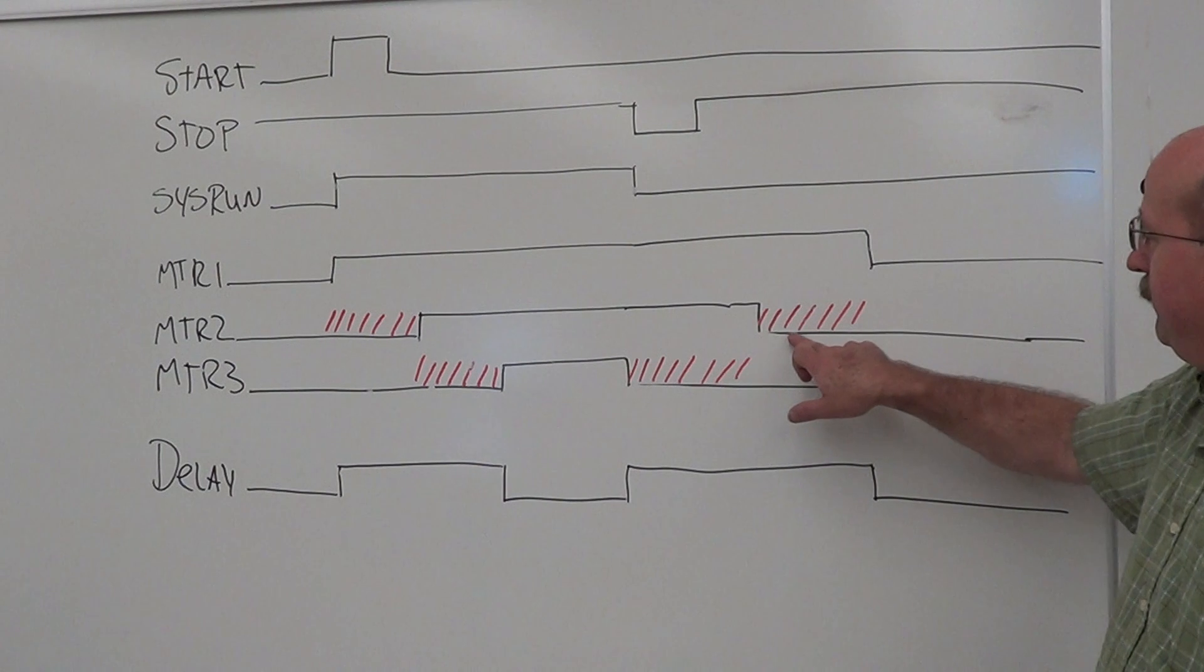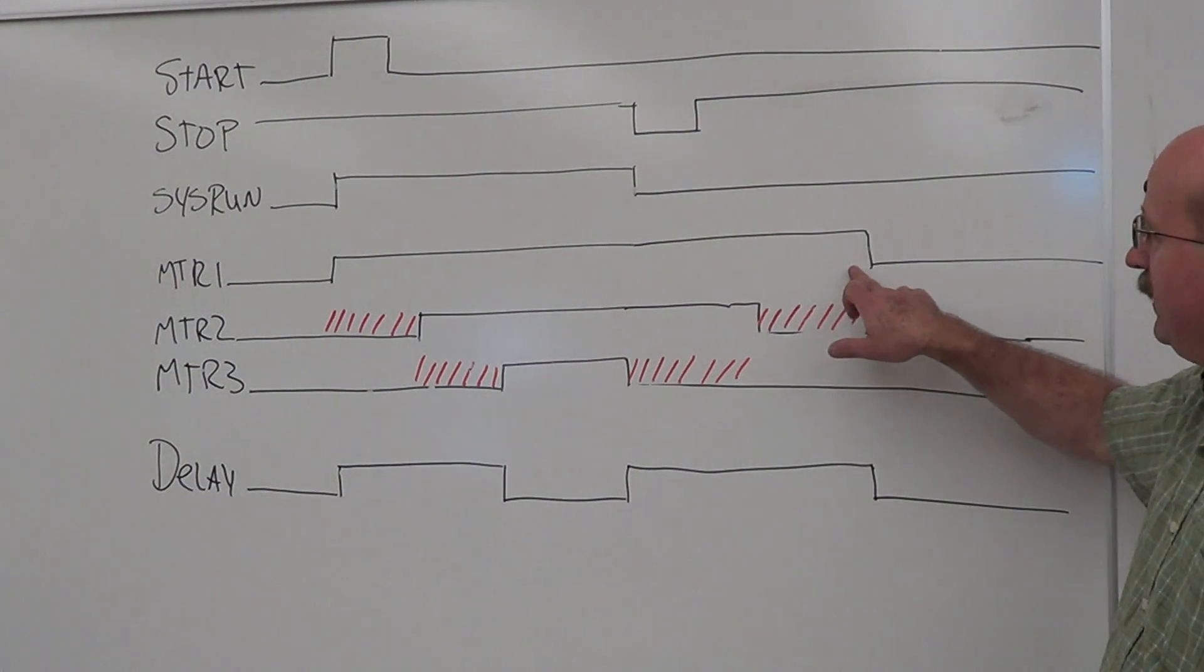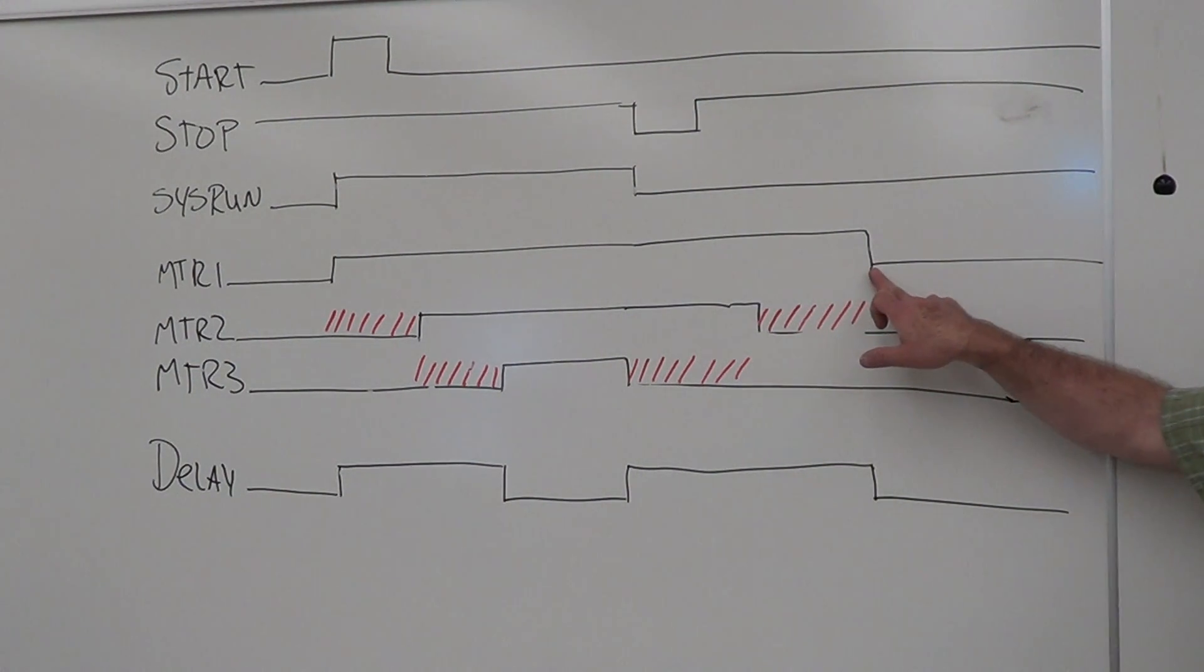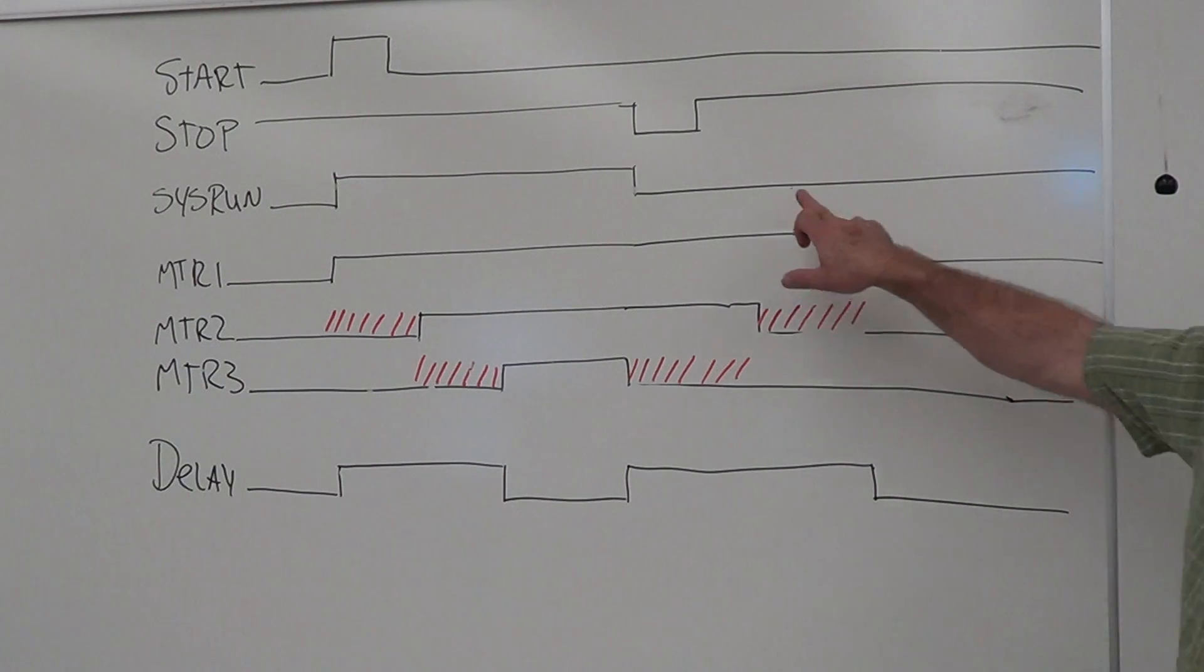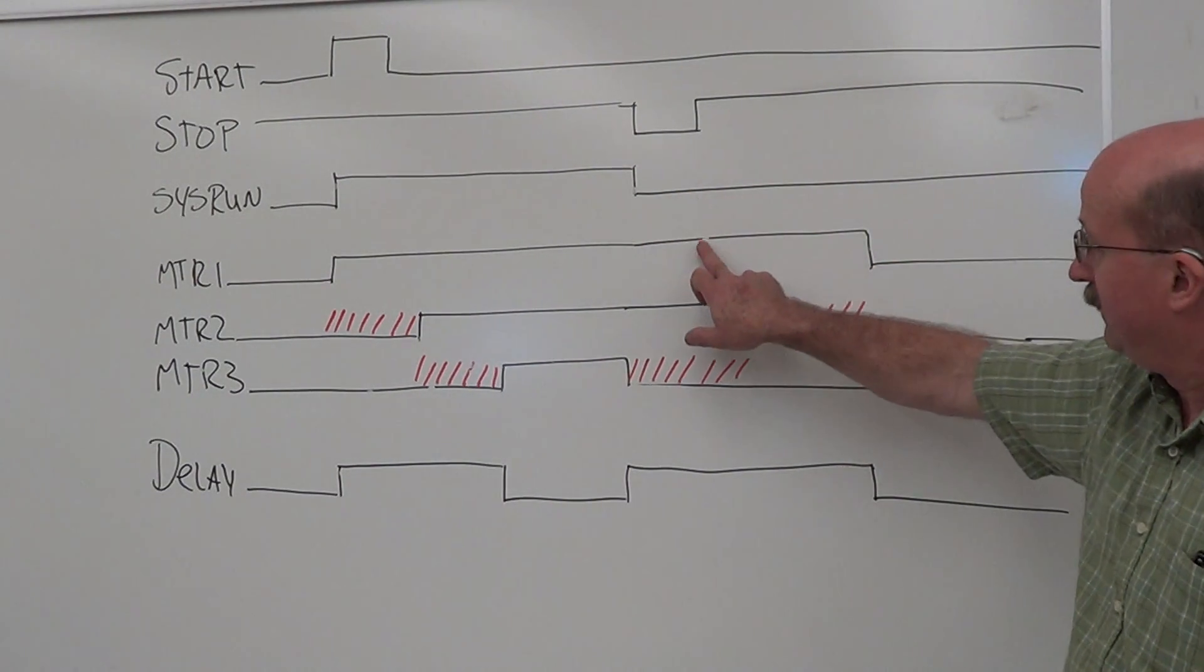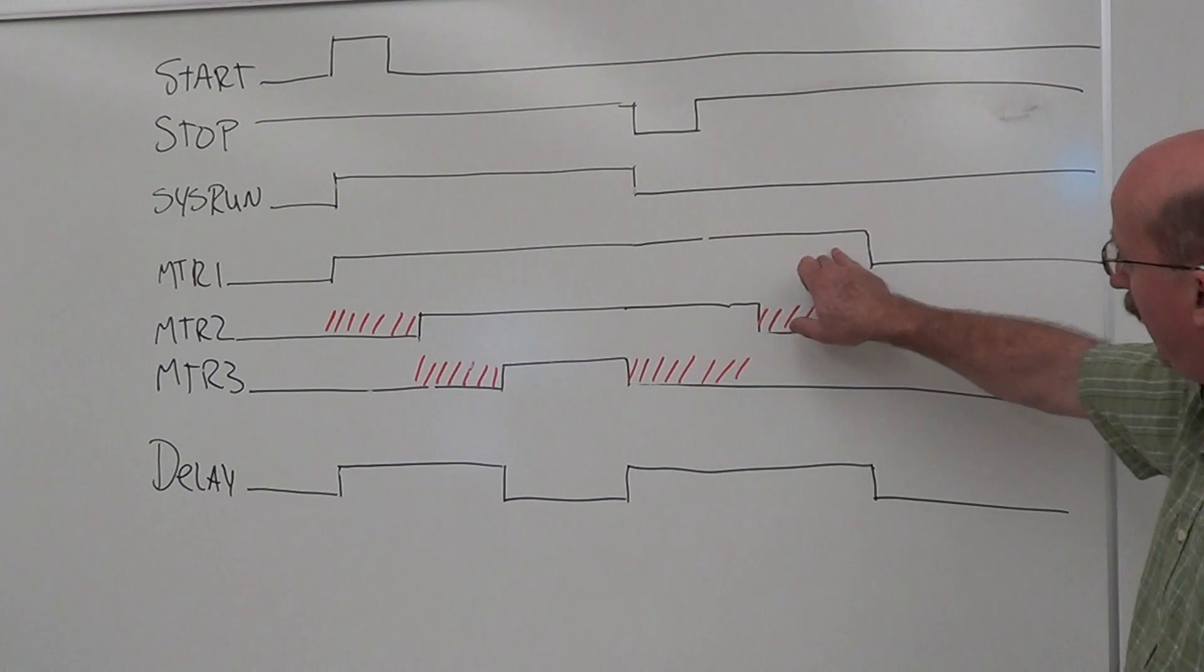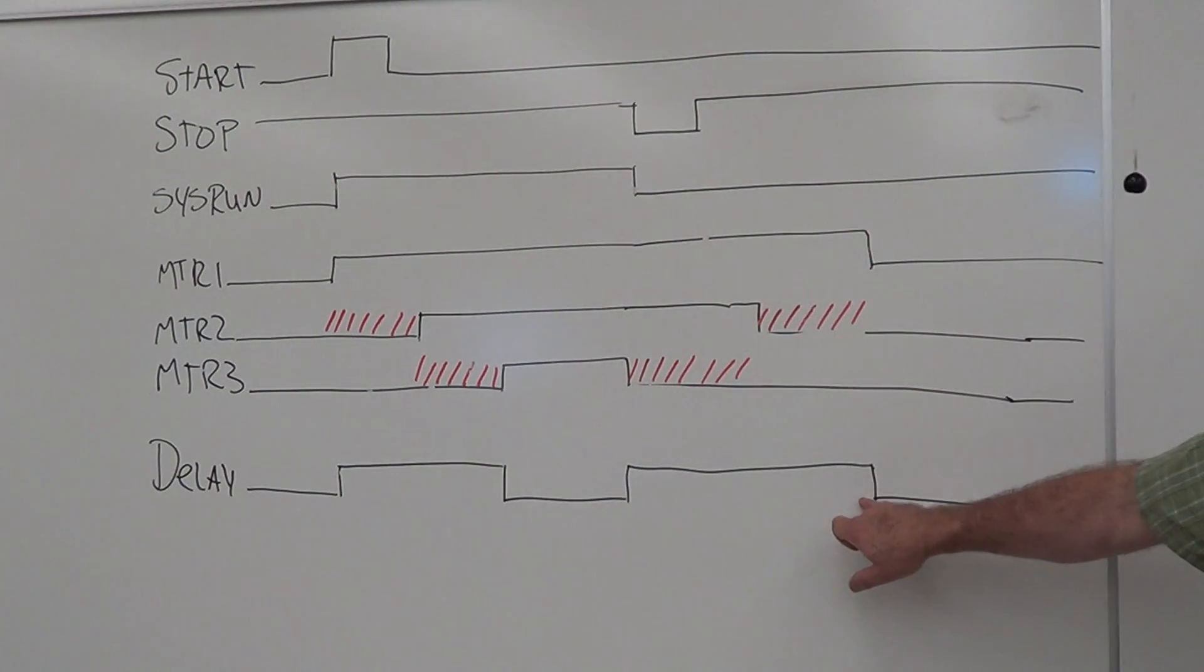Sys run turns off, motor three turns off immediately. Delay period starts for motor two, then motor two shuts off. Delay period starts for motor one, and then motor one shuts off. If sys run is off and motor one is on, that's our off-delay, isn't it?